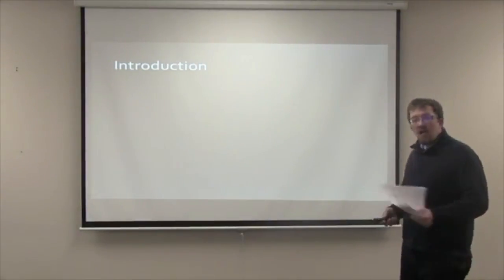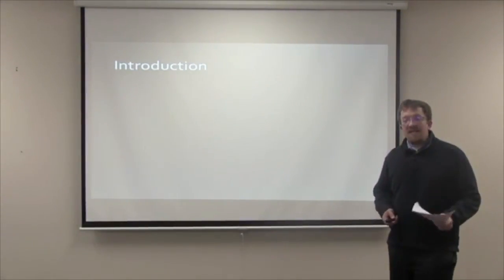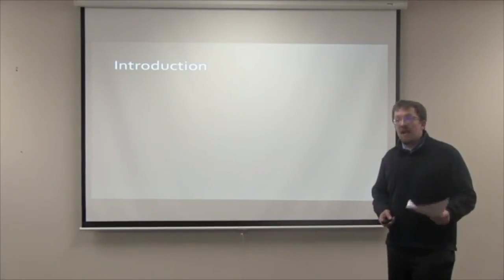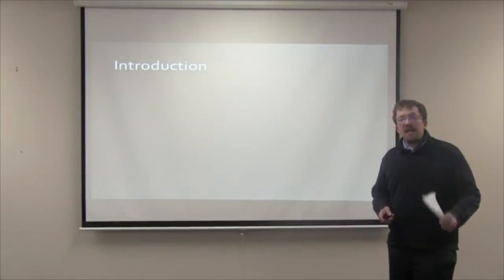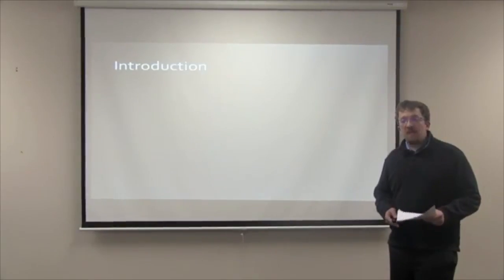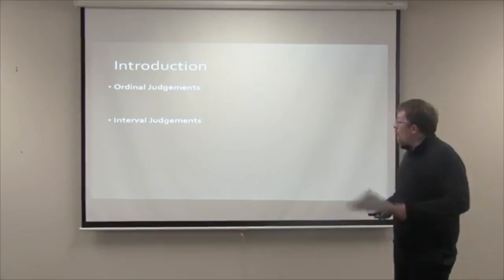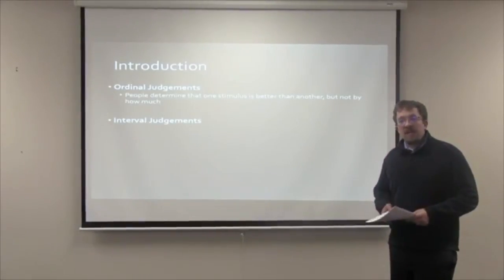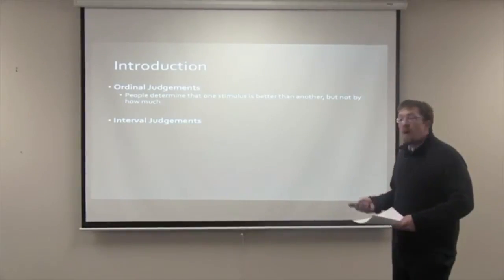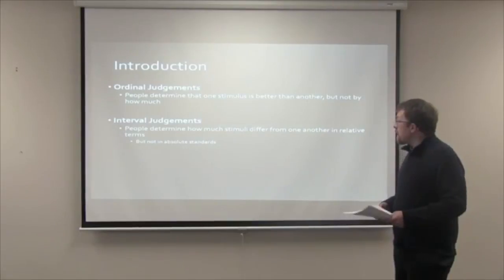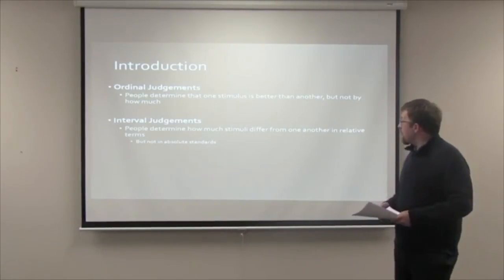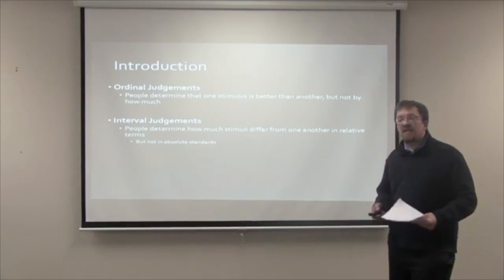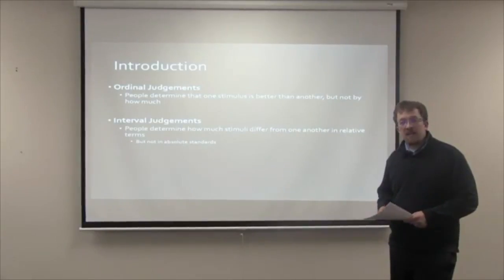Related to this point, other researchers have shown that when assessing a stimulus, people represent where in the distribution that stimulus lies rather than the absolute value of that stimulus, by making either ordinal judgments or interval judgments. An ordinal judgment suggests that people can determine which stimulus is better but not by how much, while an interval judgment suggests that people can determine how much stimuli differ from one another in relative terms, but not in relation to absolute standards.